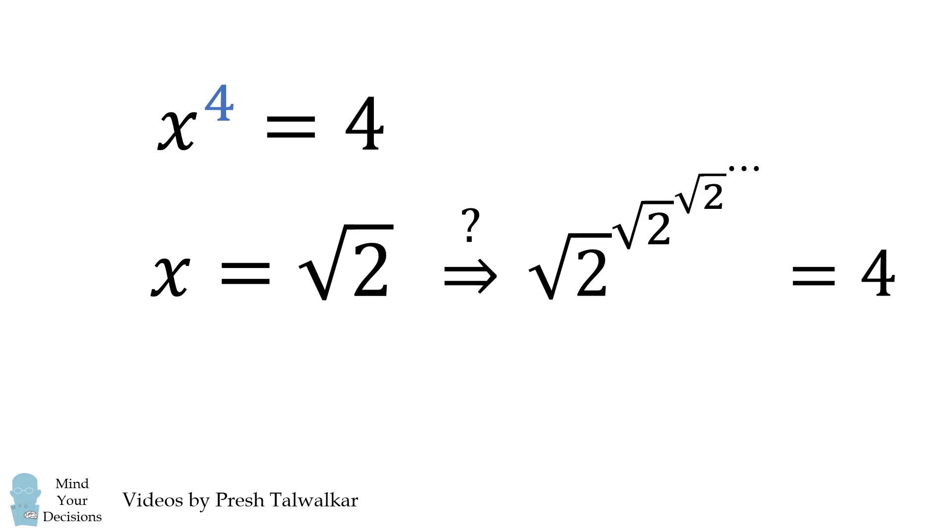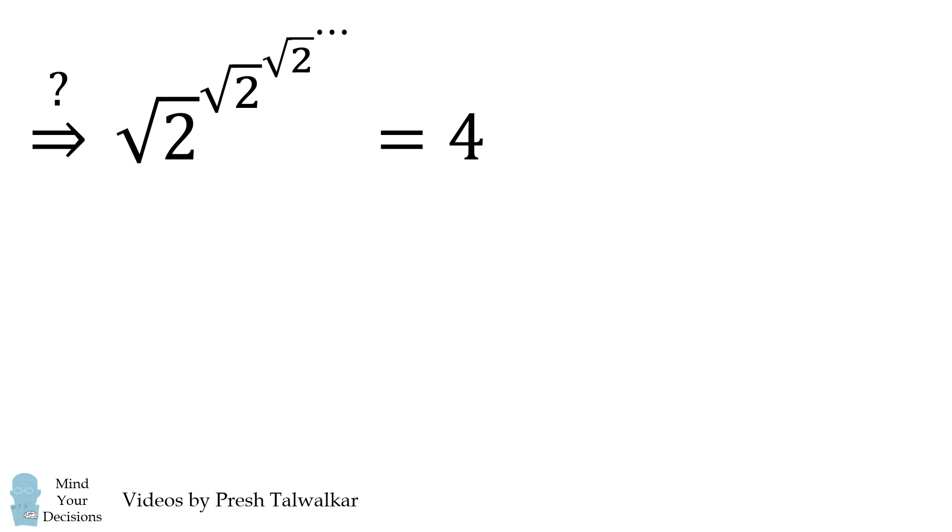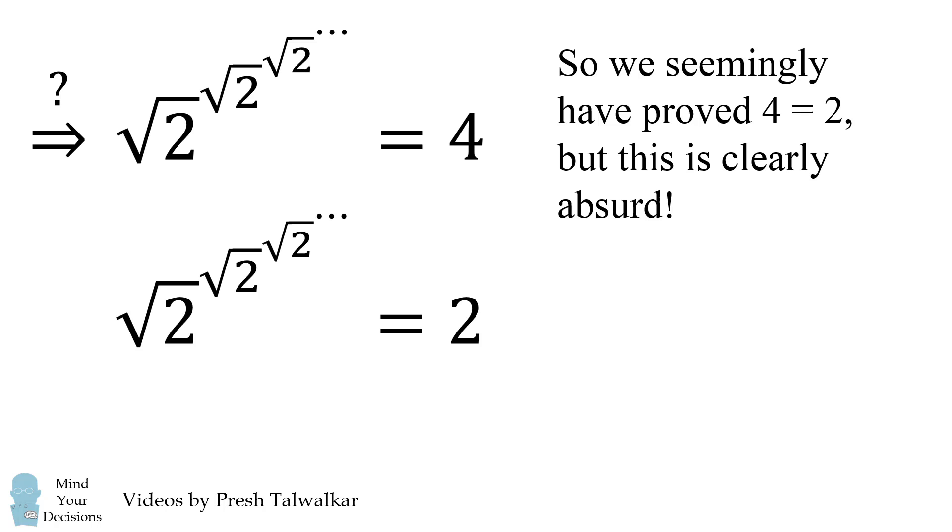So, we seemingly have that square root of 2 raised to the power of square root of 2 raised to the power of square root of 2 infinitely many times is also equal to 4. And this raises a potential paradox. So, we've shown that 4 is equal to 2. But this is clearly absurd. So, where is the mistake in this supposed proof?